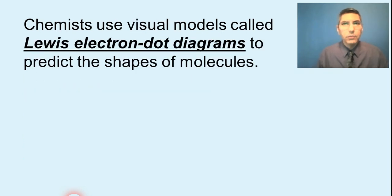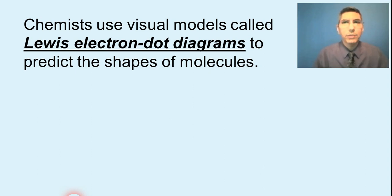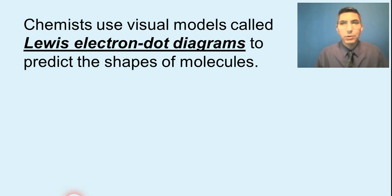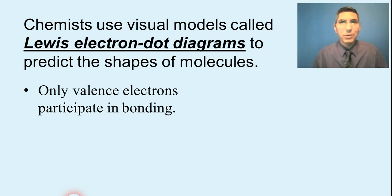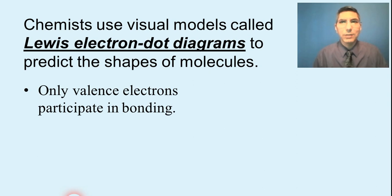When we visualize these molecules in chemistry, we use a visual model called Lewis electron dot diagrams to help us understand what molecules look like. Sometimes these are called electron dot diagrams, Lewis diagrams, Lewis structures, or that full name. When we draw these Lewis electron dot diagrams, there are a couple of ground rules. First of all, remember that the only electrons that actually participate in bonding are valence electrons. Even though an atom may have lots of electrons, we only care about the valence electrons — those are the only ones we'll represent in our Lewis electron dot diagrams.